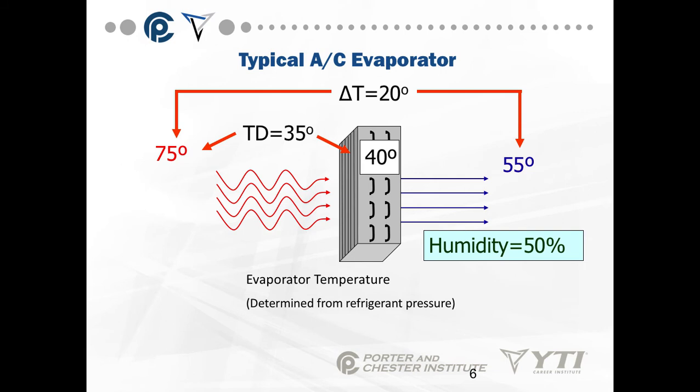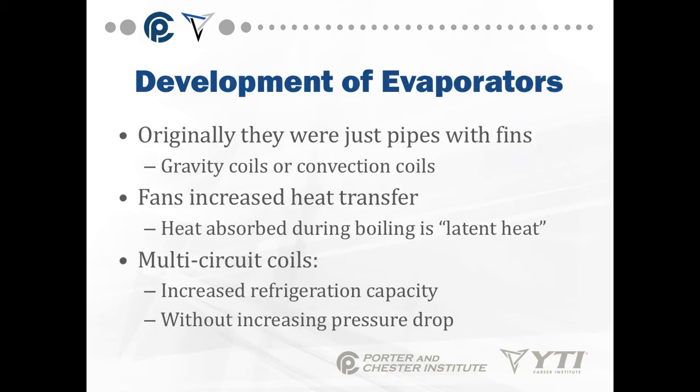With 50% humidity, one of the things our evaporator has to do is remove humidity. Originally, evaporators were just pipes with fins — gravity coils or convection coils. Fans increased heat transfer. Heat absorbed during the boiling process of refrigerant is latent heat. Surface area and capacity were increased by folding the coils over, using multi-circuit coils, making coils longer with more surface area without increasing pressure drop.